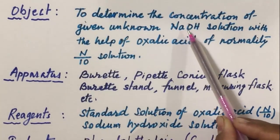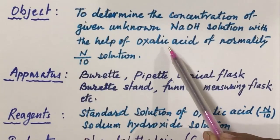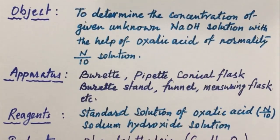Here NaOH is analyte and oxalic acid is titrant. For performing this experiment we need some apparatus. These apparatus are burette, pipette, conical flask, burette stand, funnel, measuring flask, and all the necessary equipment.